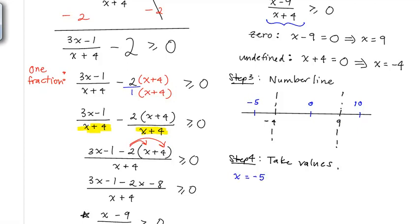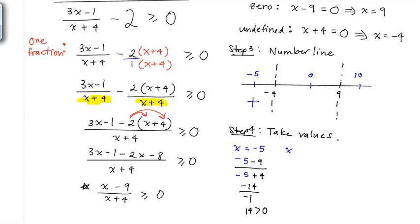At x equals negative 5: (negative 5 minus 9) over (negative 5 plus 4) equals negative 14 over negative 1, which is positive 14. So the region to the left of x equals negative 4 gives positive values. At x equals 0: (0 minus 9) over (0 plus 4) equals negative 9 over 4, which is negative. So x values between negative 4 and 9 are negative.